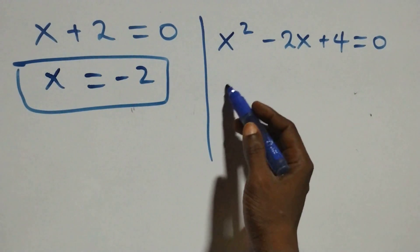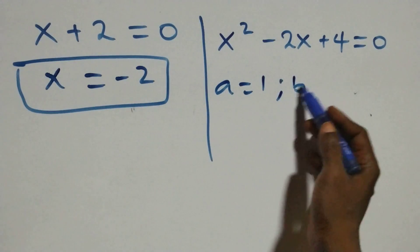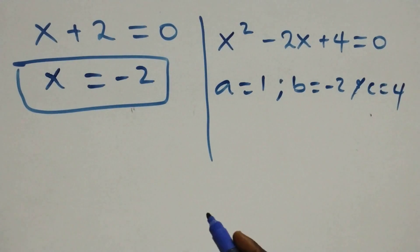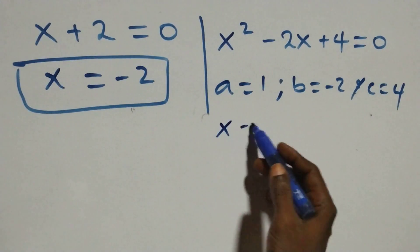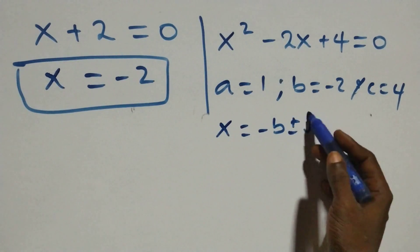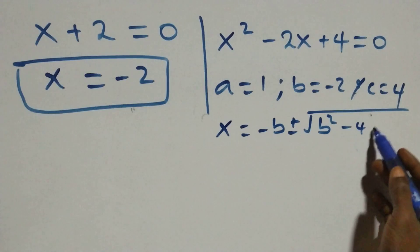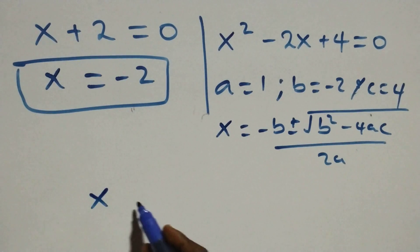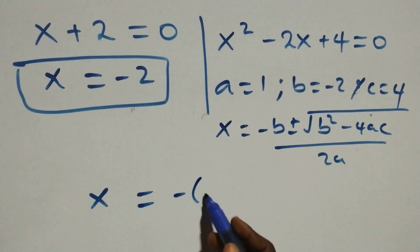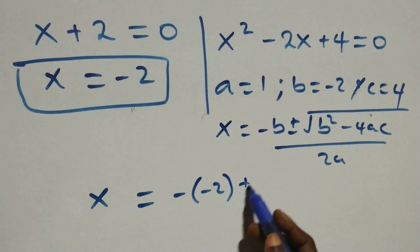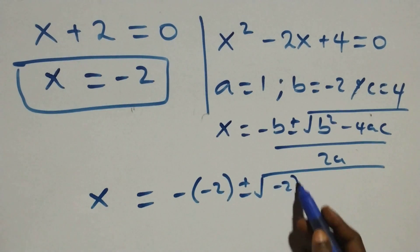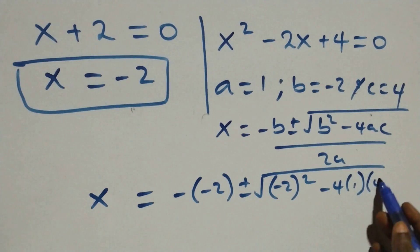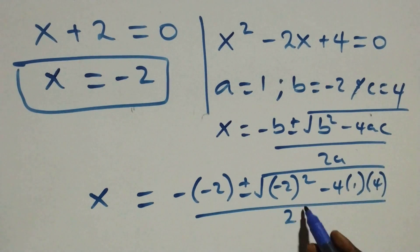For the quadratic x² - 2x + 4 = 0, we have a = 1, b = -2, and c = 4. Applying the quadratic formula x = (-b ± √(b² - 4ac)) / 2a, we get x = (-(-2) ± √((-2)² - 4·1·4)) / (2·1).